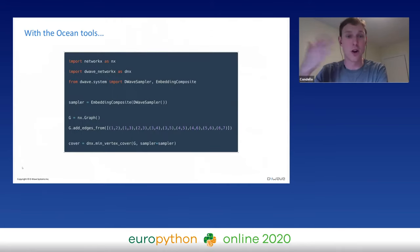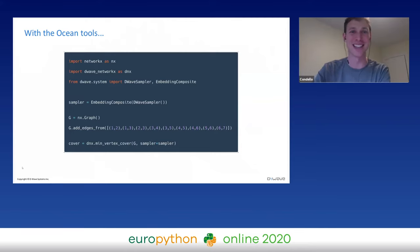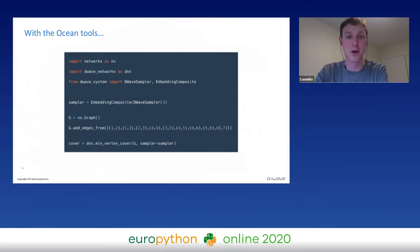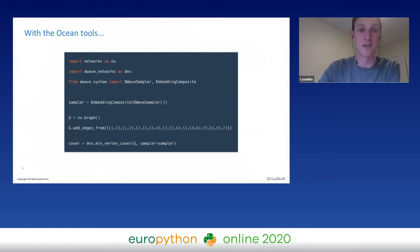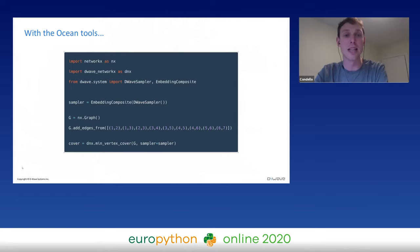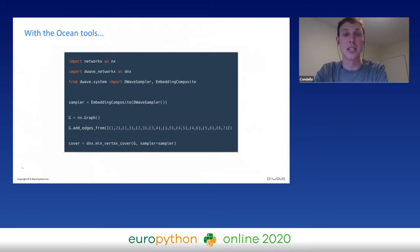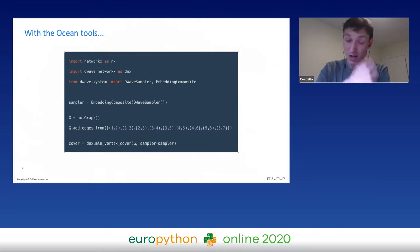Here's what solving that problem with the Ocean tools looks like in Python. At the top, you can see we're importing NetworkX, a very popular open source graph library developed by folks out of Los Alamos National Labs. We've implemented our own extension called D-Wave NetworkX, which extends some of the notions in that package. You can also see we're importing objects from our D-Wave system package that lets us access the quantum computer.